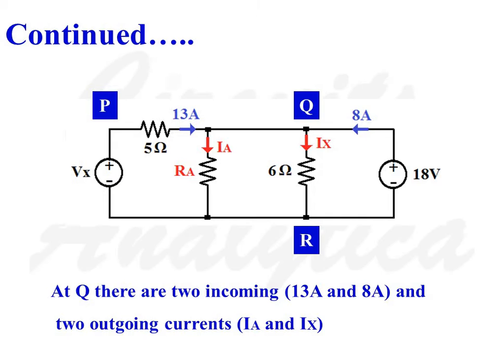IX is the current flow through 6 ohms resistance which is connected across the 18V source, and IA is the current flow through resistance RA which is also connected across the 18V source.